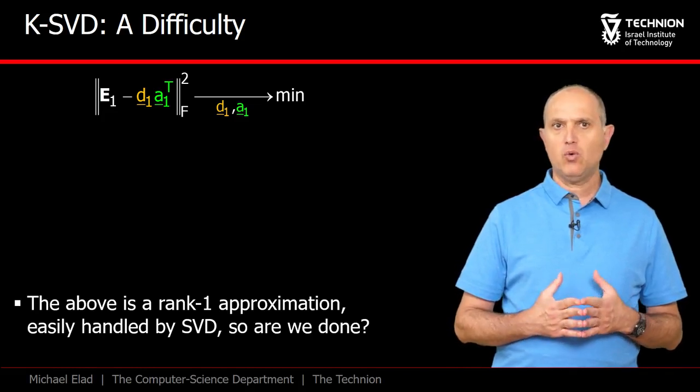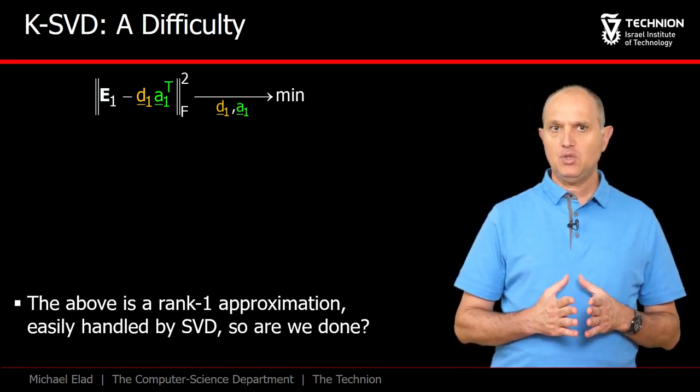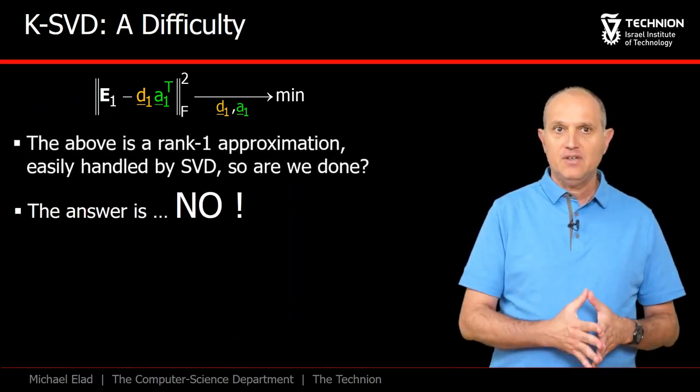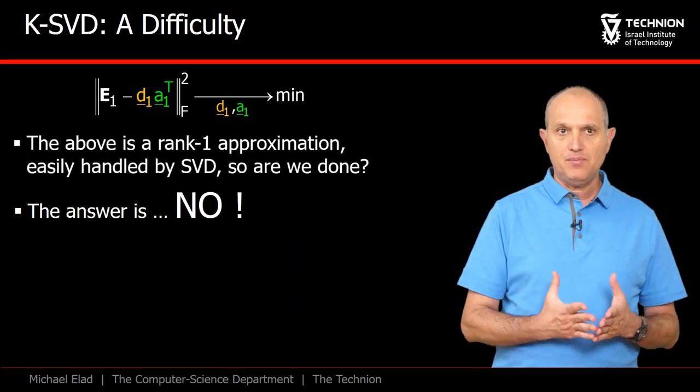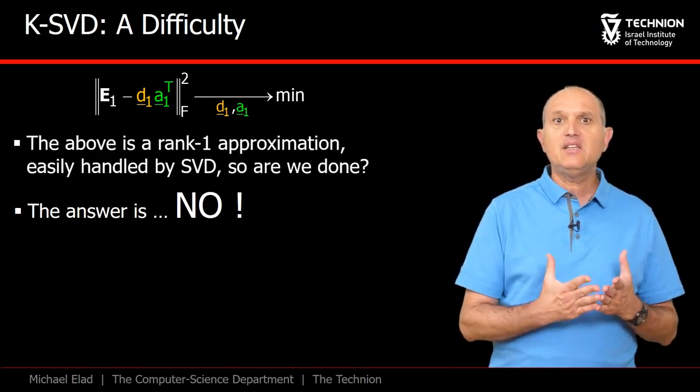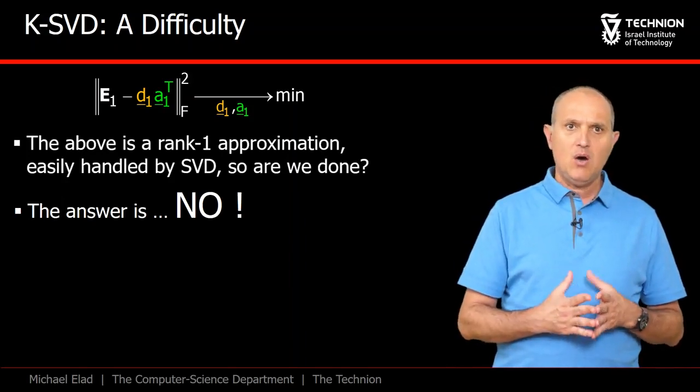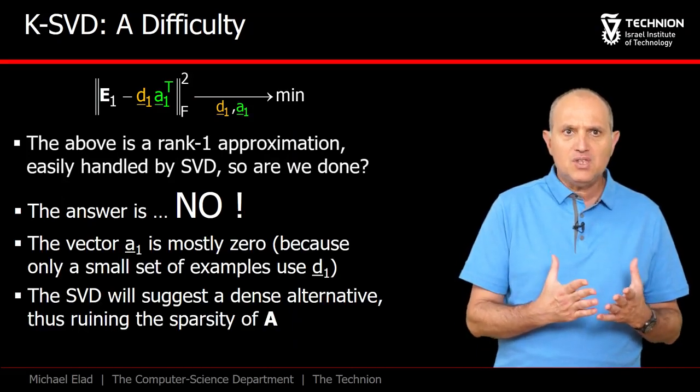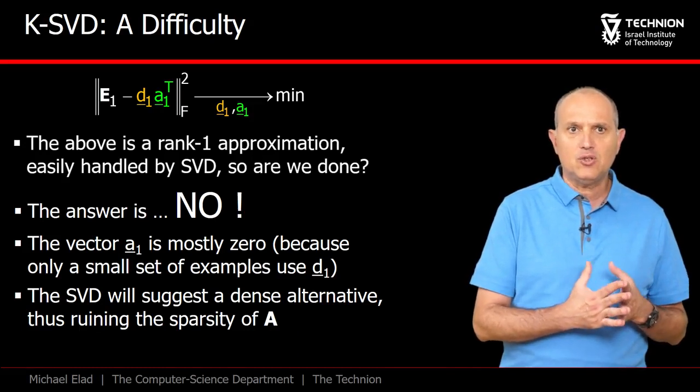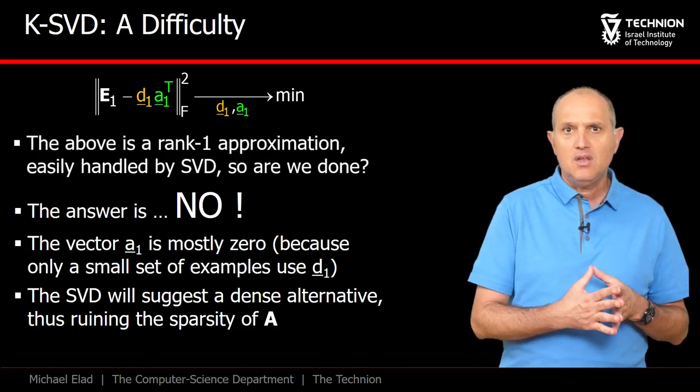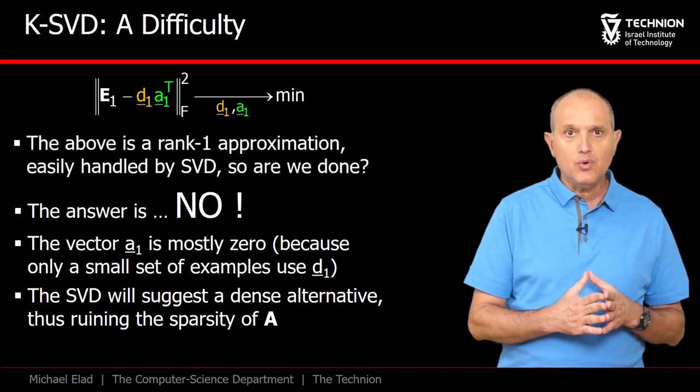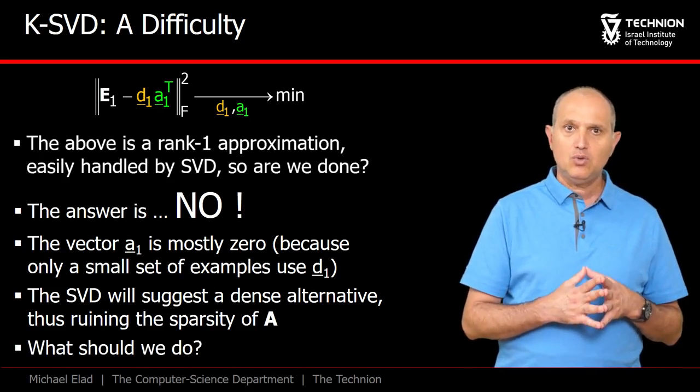We have just met this rank-1 error shown above, and the question is whether this is sufficient to conclude our story. The answer is negative. If we follow the above description and approximate E1 by a rank-1 matrix, we will get a dense vector A1 transposed. However, the original version of this row was very sparse. A small fraction of the examples are using the first atom, and for all the rest, the entries in this row are zeros. Thus, this approach will ruin the sparsity of A. What should we do?